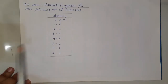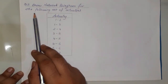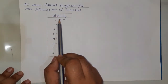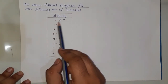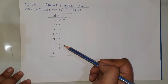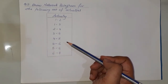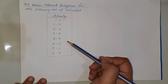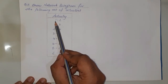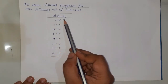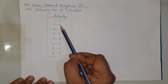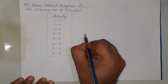Question number five: draw a network diagram for the following set of activities. Here the activities are given in the form of numbers, and the numbers represent the events, so they are directly given as activities based on events. Starting off, from event one, event two is released, and from event one, event three is also getting released, so we start with event number one.